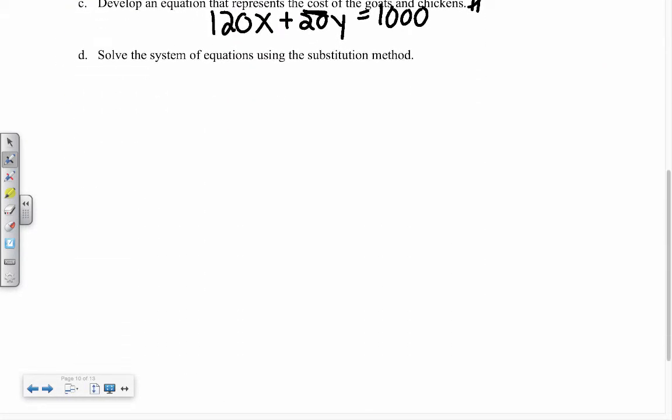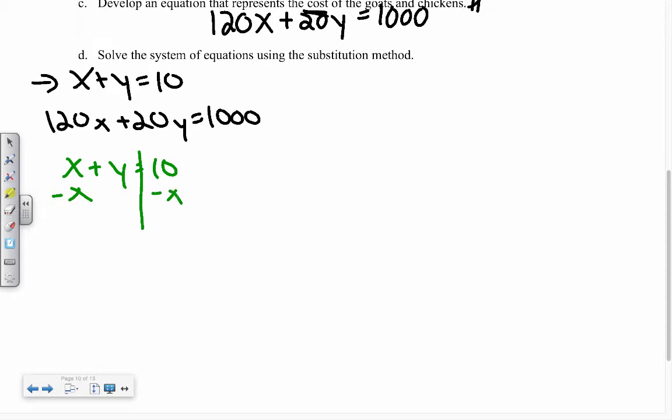Now, I solve. So, I have X plus Y equals 10. 120X plus 20Y equals a thousand. So now, I am going to choose an equation to solve. I am going to choose this equation because the X's and the Y's both have 1's in front of them. And I am going to solve for Y. So, X plus Y equals 10. I am going to subtract the X of both sides. So, I got Y equals 10 minus X.